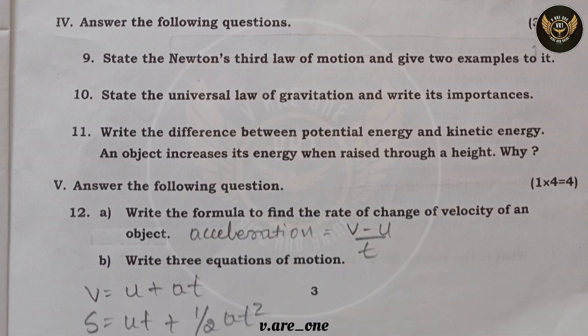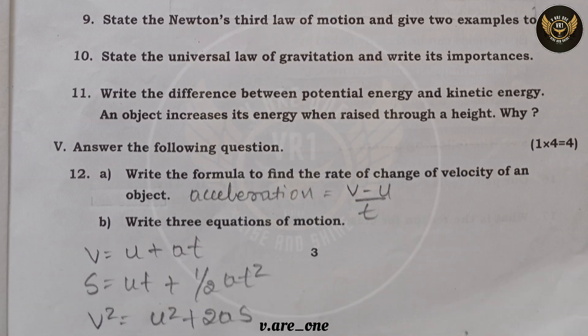Question twelve: rate of change of velocity is nothing but acceleration. Acceleration equals final velocity minus initial velocity divided by time — (v - u) / t. The three equations of motion are: v = u + at; s = ut + ½at²; v² = u² + 2as.